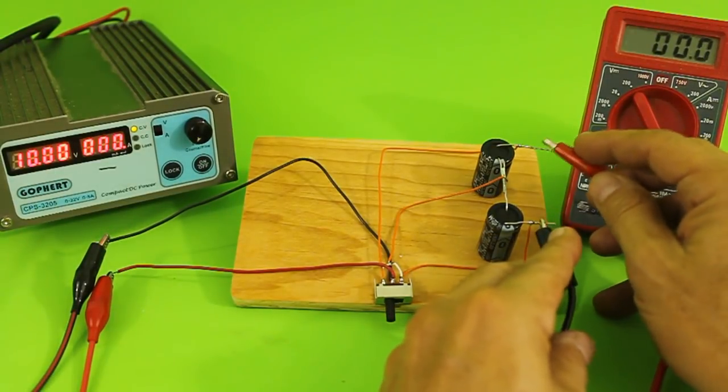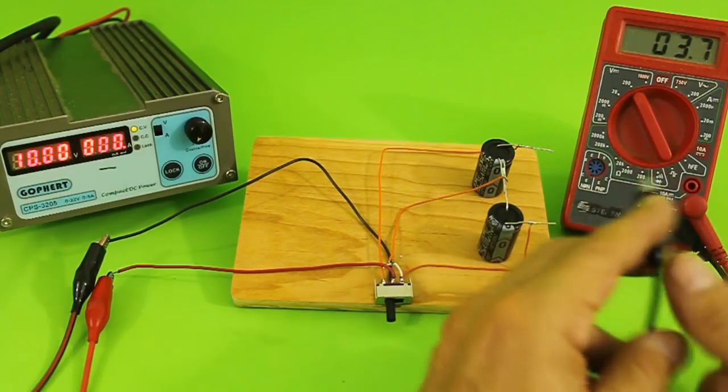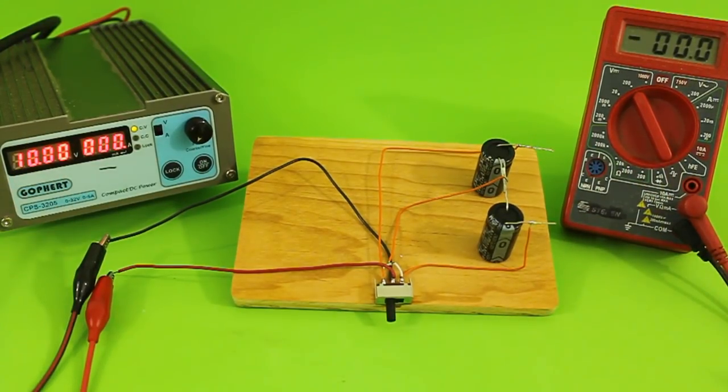So, at the output of the circuit, we have 20 volts, double the voltage of the power supply.